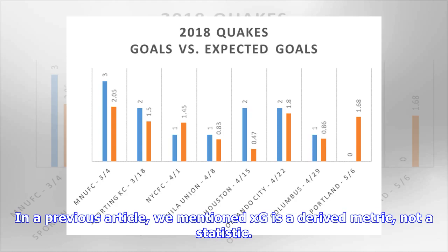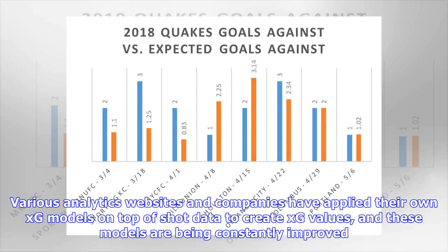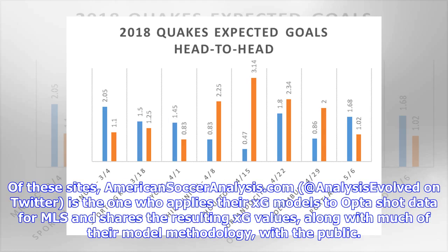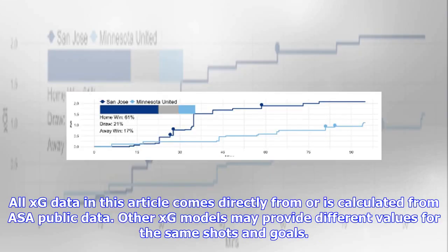In a previous article we mentioned xG is a derived metric, not a statistic. Various analytics websites and companies have applied their own xG models on top of shot data to create xG values, and these models are being constantly improved. Of these sites, americansocceranalysis.com (ASA, also known as Analysis Evolved on Twitter) is the one who applies their xG models to Opta shot data for MLS and shares the resulting xG values along with much of their model methodology with the public. All xG data in this article comes directly from or is calculated from ASA's public data; other xG models may provide different values for the same shots and goals.